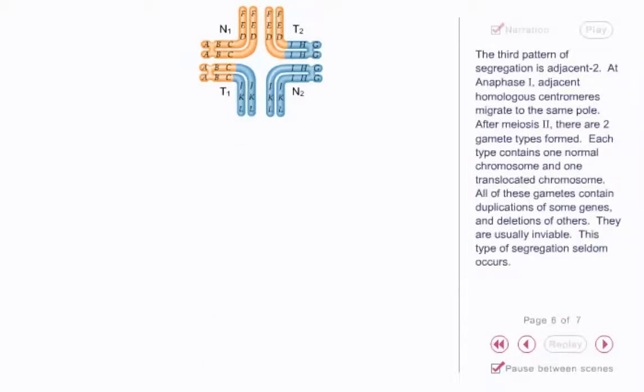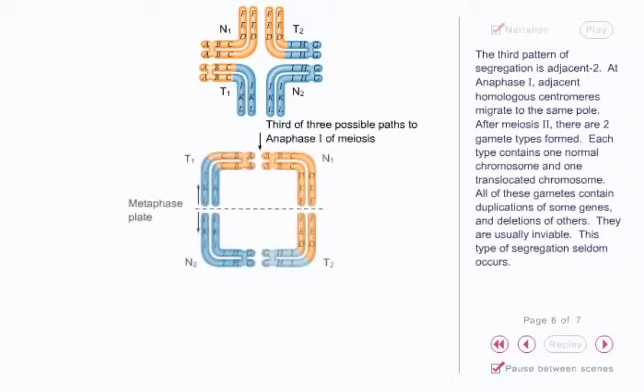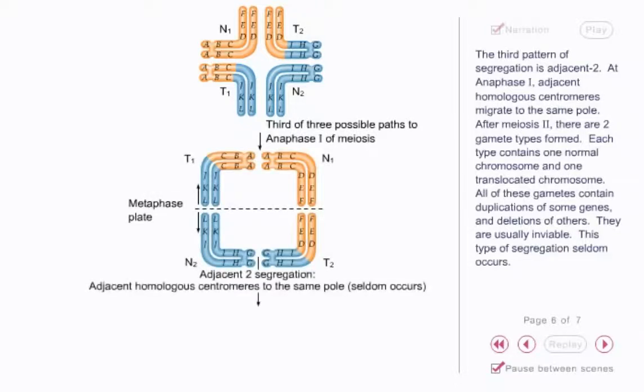The third pattern of segregation is adjacent II. At anaphase I, adjacent homologous centromeres migrate to the same pole. After meiosis II, there are two gamete types formed.